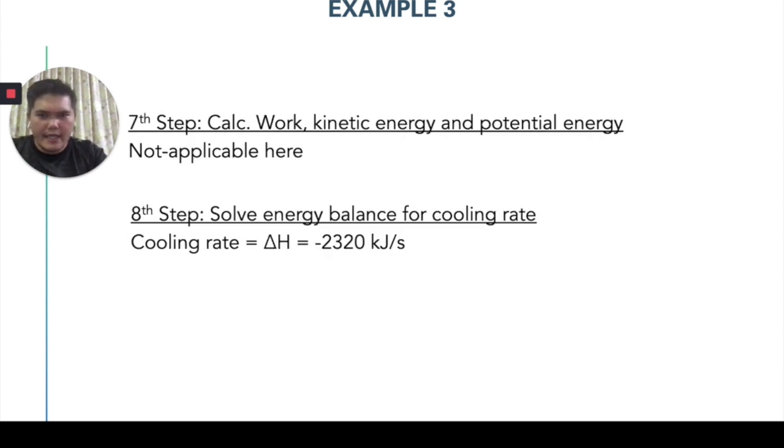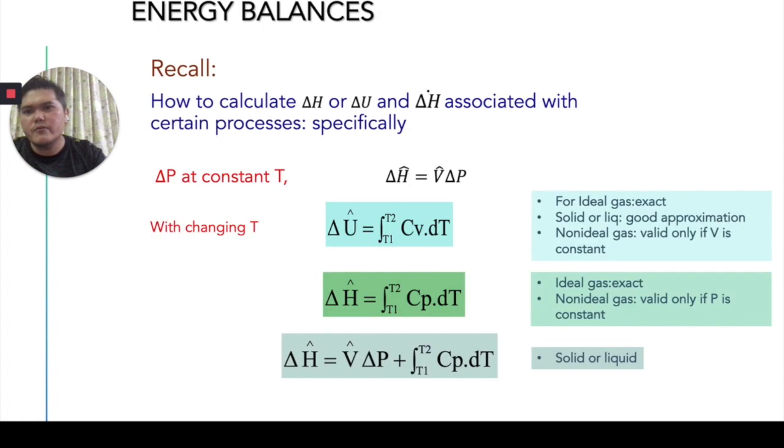So, we finally calculate here and then we got the cooling rate that is given here. That is the step that we supposed to follow. So, if we could recall back, what happened is that in order for us to calculate the specific enthalpy or specific internal energy associated with certain processes...